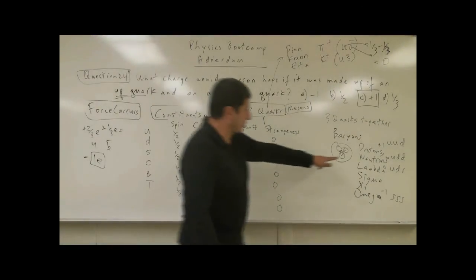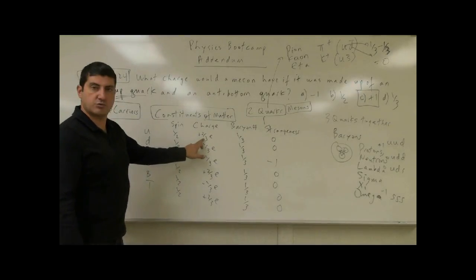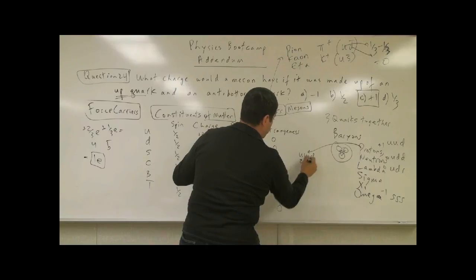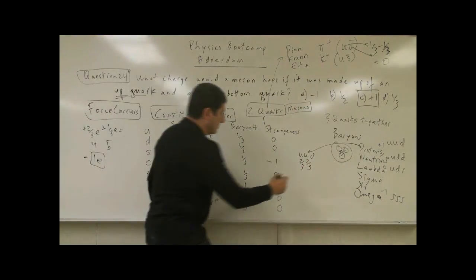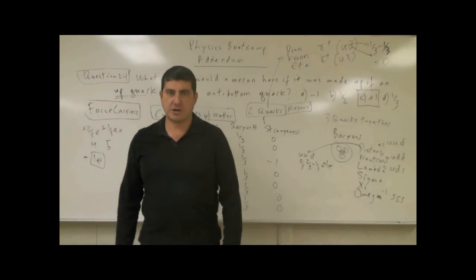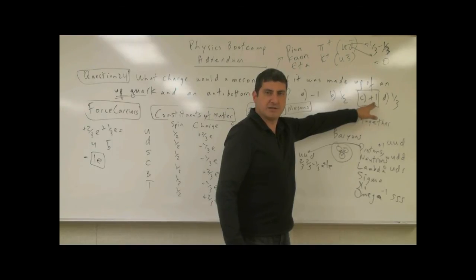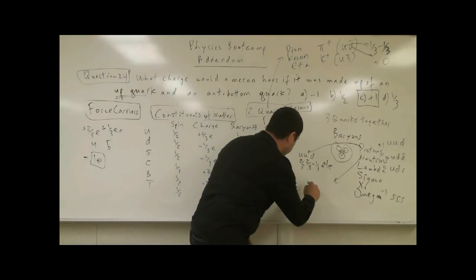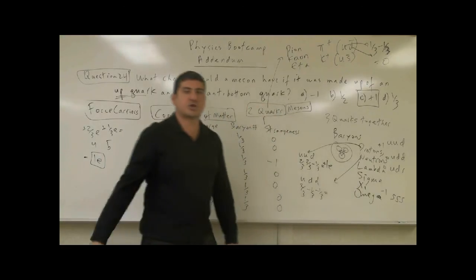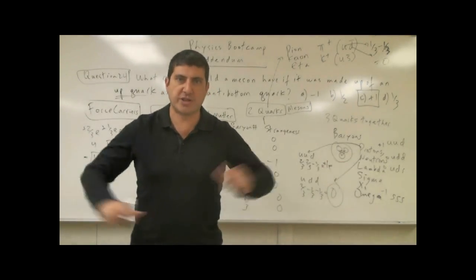Let's verify this makes sense by checking the proton. The proton is UUD: two up quarks and one down. Two up quarks give two-thirds plus two-thirds equals four-thirds; the down quark is negative one-third. Total: four-thirds minus one-third equals three-thirds, which is one e. The proton has a positive one charge, which we already know to be true. How about the neutron? The neutron is UDD: one up quark (charge two-thirds) and two down quarks (each negative one-third). Two-thirds minus one-third minus one-third equals zero. Therefore the neutron does not have a net charge, which we already know to be true.